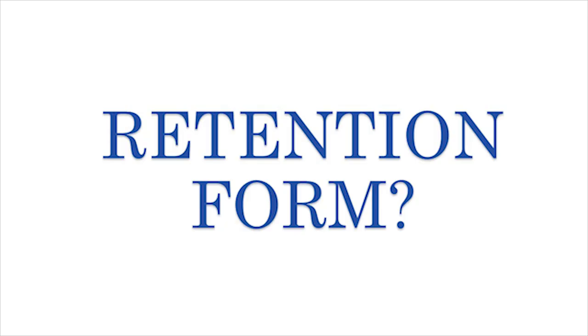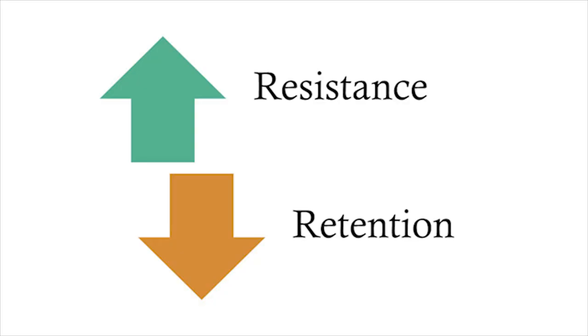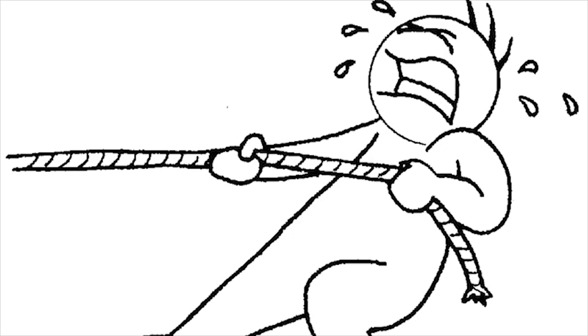What is the retention form? Retention form is basically the shape and form of the cavity which prevents the dislodging of the restoration. For example, in the resistance form, the forces which can fracture the tooth or the restoration are taken care of. Whereas in the retention form, we take care of forces which may try to lift the restoration from the cavity. Many a times people eat sticky food, and that can pull the restoration from the cavity. So to prevent that, we have to give primary retention form.